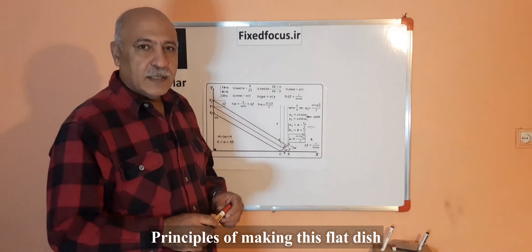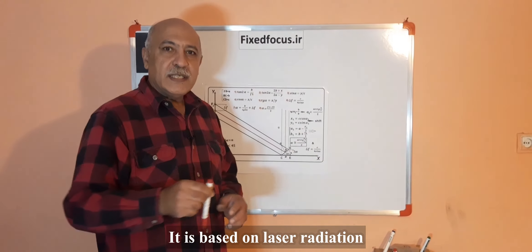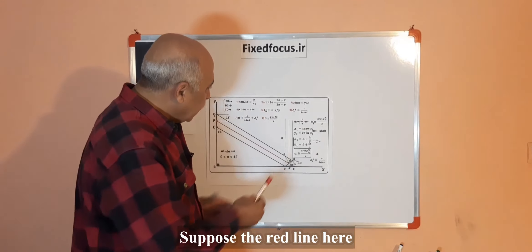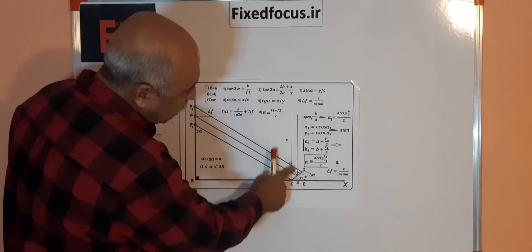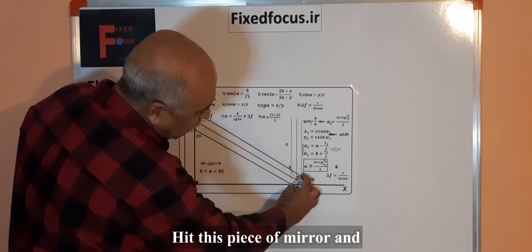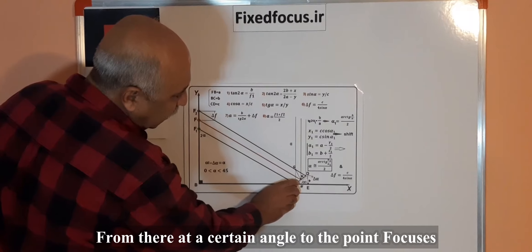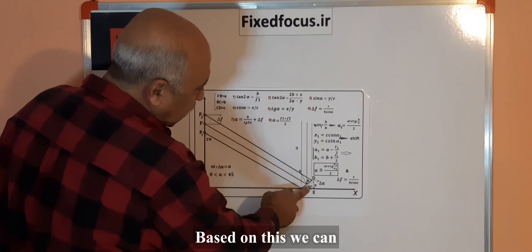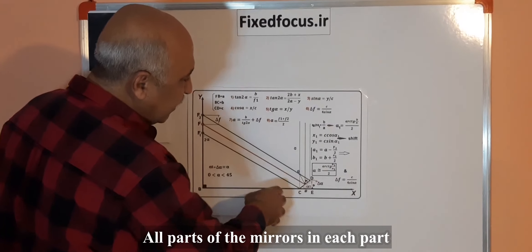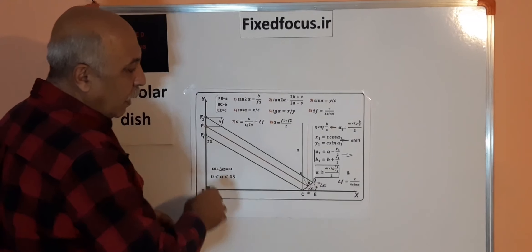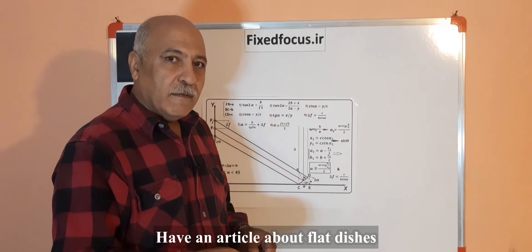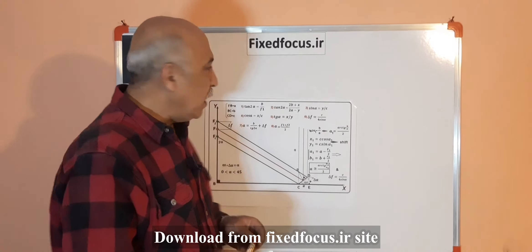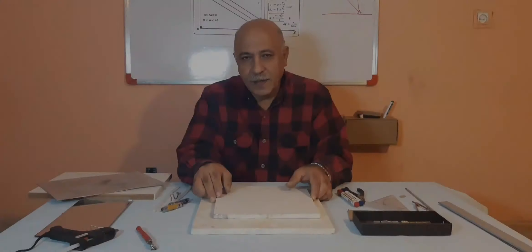The principle of making this flat dish is based on laser radiation which is shown on the mirror from above and from there is transferred to the focus. The red line here shows the same light that comes from above, hits the piece of mirror, and from there at a certain angle goes to the point of focus. Based on this, we can orient all parts of mirror in each part and just adjust the laser light to guide to the focus. People who like more detailed information can download an article from fixedfocus.ir.